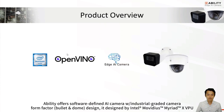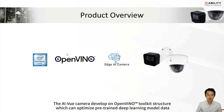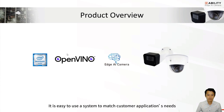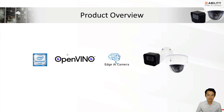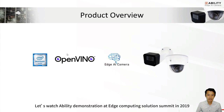Ability offers a software-defined AI camera with industrial-grade camera in bullet and dome design, powered by Intel Movidius Myriad X VPU. The AI View Camera is developed on an open OpenVINO toolkit structure, which can optimize deep learning model data. It is easy to use and matches customer application needs, making it more convenient for developers to accelerate model training and deployment. We are Intel ecosystem partners, and this video shows our attendance at the Intel Edge Computing Solution Summit in 2019.